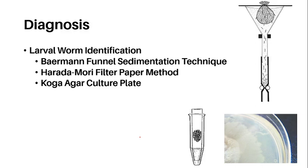How is this diagnosed? Strongyloidiasis is usually diagnosed by microscopic identification of both the rhabditiform and filariform larvae in the stool, duodenal fluid, biopsy specimens, and even sputum in disseminated infections. The stool is examined in wet mounts and are best visualized using the Baermann funnel sedimentation technique, the Harada-Mori filter paper technique, or the Koga agar plate culture method.